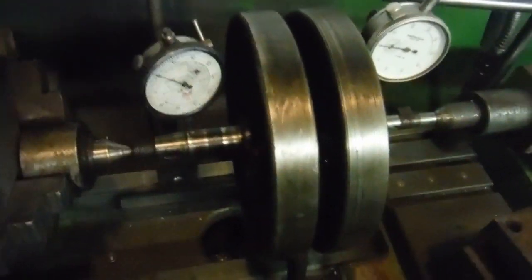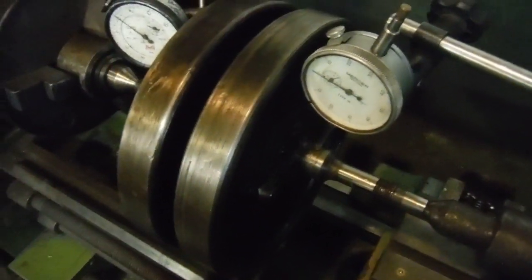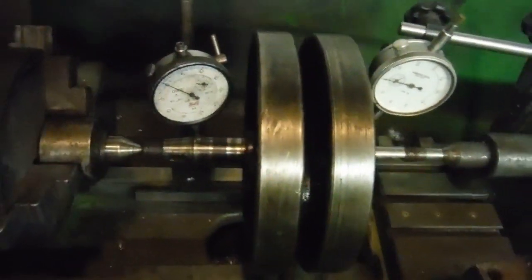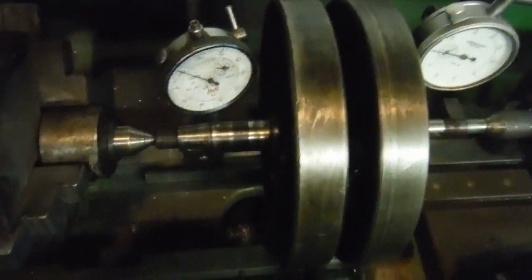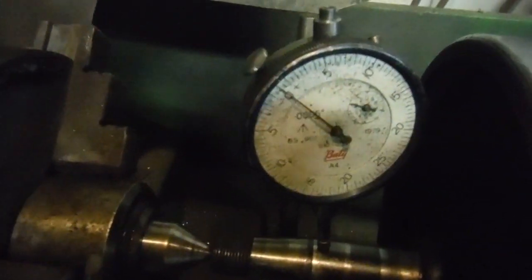I've got this 1930 BSA 350 model L crankshaft back together now. We've seen that the big end is good and I've trued it up. I've done my work on the loose timing side shaft as well, that's secure again, and I've got both clocks reading in thousandths of an inch.